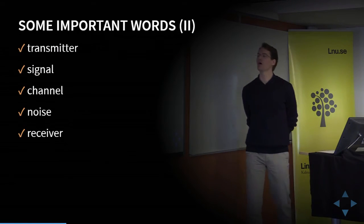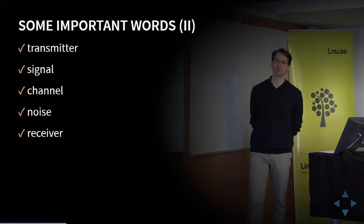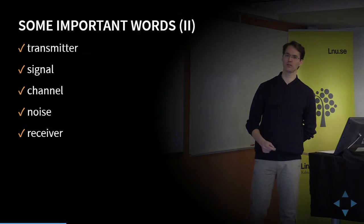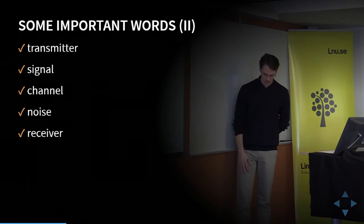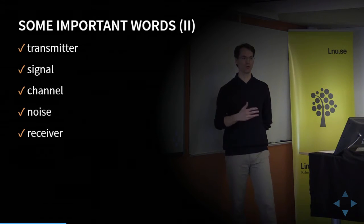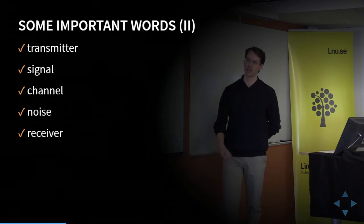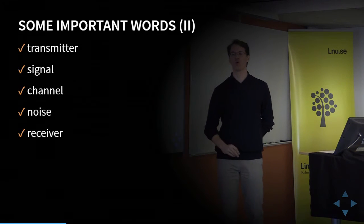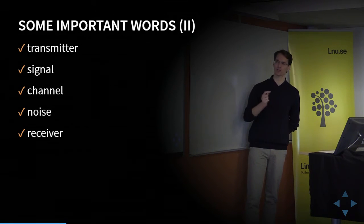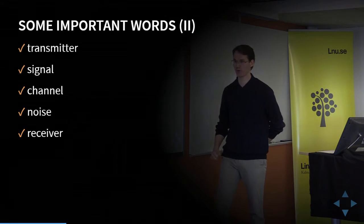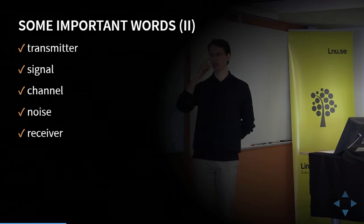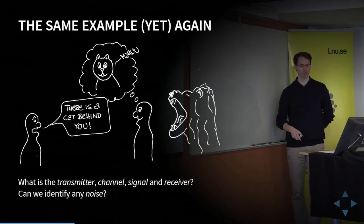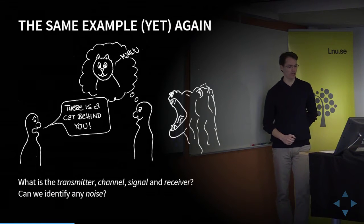We are not done yet — five more words. Transmitter: the thing that sends out the message. We have the signal — that is the physical representation of the message. When I speak in this room, the sound waves are the signal. We have the channel — that is the thing that carries the signal from the transmitter to somewhere else. And then we have noise — anything that affects this signal while traveling from the transmitter to the receiver. And the receiver is the thing on the other end that can take this signal and turn it back into a meaningful message. So once again we look at the picture and ask: what is the transmitter, channel, signal, and receiver?